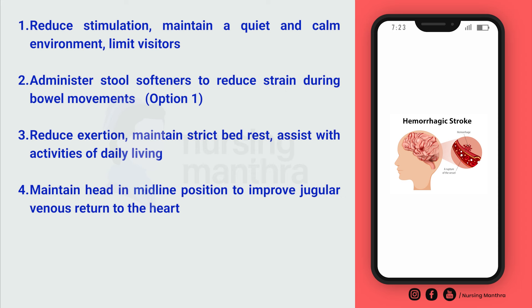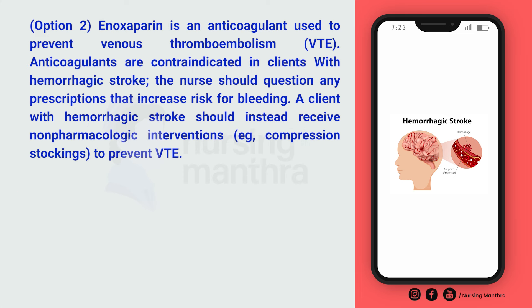Other measures include reducing exertion, maintaining strict bed rest, assisting with activities of daily living, and maintaining head in midline position to improve jugular venous return. Option 2 was not selected because enoxaparin is an anticoagulant used to prevent VTE — venous thromboembolism — and anticoagulants are contraindicated in clients with hemorrhagic stroke. The nurse should question any prescription that increases the risk for bleeding.